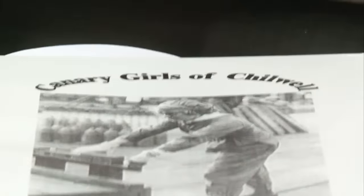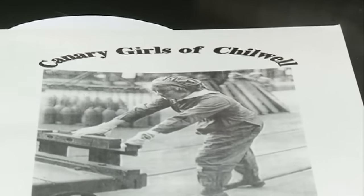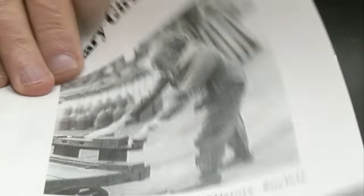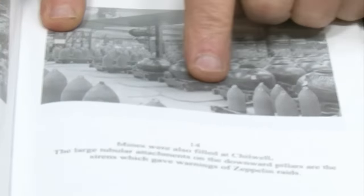TNT is bright yellow. And the young women who worked filling the shells started absorbing it in their skin and were known as the Chilwell Canaries because their skin was bright yellow. And there's a book that was recently published about these women working in the shell factory called the Canary Girls of Chilwell. And on the 1st of July, 1918, there was an enormous explosion in the ammonium nitrate and TNT works. Nobody to this day knows quite why it happened.